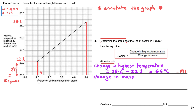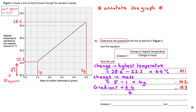The change in mass is much easier: we had 1 gram and then 5 grams, so the change is 5 − 1 = 4 grams — that's the second mark. To calculate the gradient, take the change in highest temperature (6.4°C) and divide by the change in mass (4 grams) — this sets out the calculation for the third mark. Always show your calculations for any question worth more than two marks.